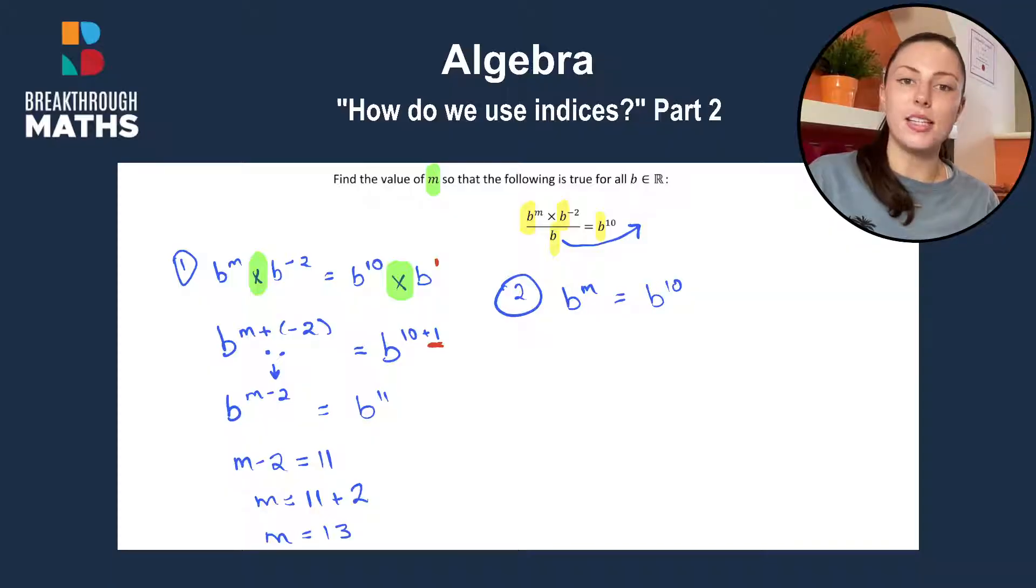So the B to the power of 10 stays where it is. We're going to have to move B and B to the power of minus 2. So we know what happens when we move B. We've done that already. It changes to multiply by B. And B to the power of minus 2 is being multiplied on the left. So it will be divided on the right.